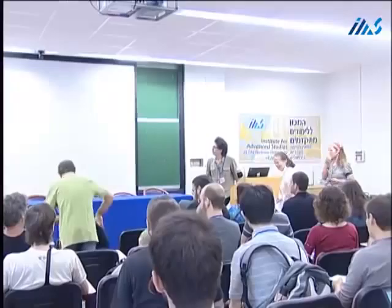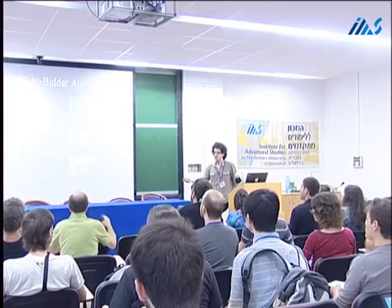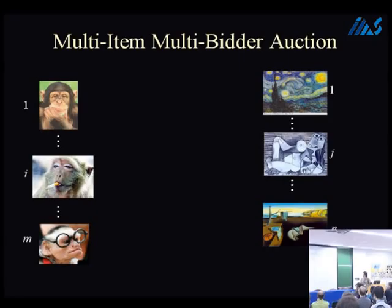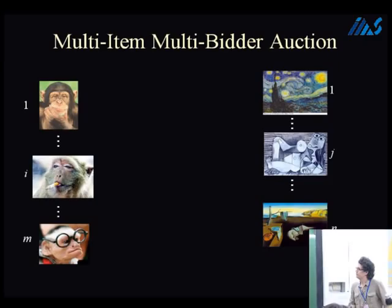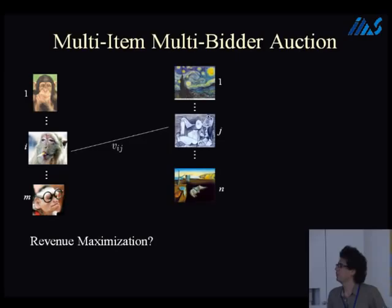The problem I'm interested in is this: I have M bidders, buyers, and N items, and I want to sell these items to the bidders. For starters, let's assume that each of these guys is unit demand — he wants to buy one item. His value for item j is v_ij. So if I have the v_ij's, which I don't, but if I had them, then I would compute a matching or whatever and get the optimal surplus.